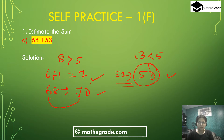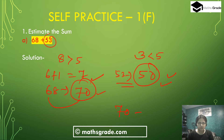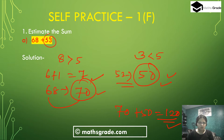So 68 rounded off to the nearest 10 is 70, and 53 rounded off to the nearest 10 is 50. Now 70 plus 50 is 120, and 120 is the answer. For estimating, we round off to the nearest 10, nearest 100, and nearest 1000 — I have already solved some problems in self-practice 1E, please watch that playlist.